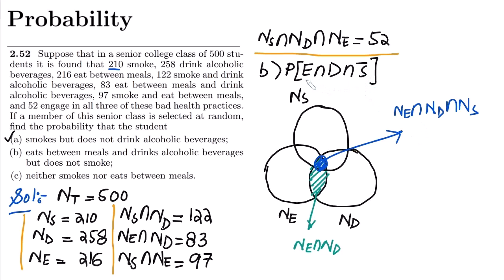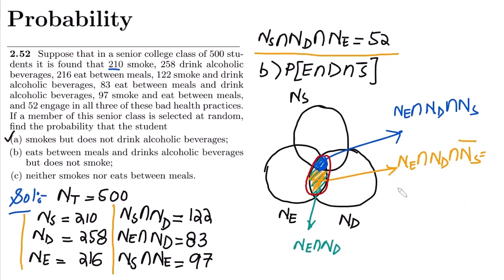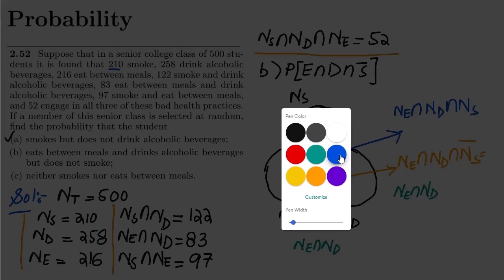We need the number of students who eat between meals and drink but do not smoke. Looking at the Venn diagram, this is the area where E and D overlap but excluding the smoking region. I'll represent this with red color. This area equals N(E ∩ D) minus the triple intersection, so: N(E ∩ D) − N(E ∩ D ∩ S).